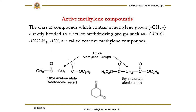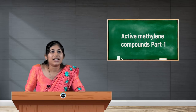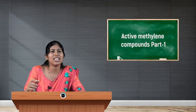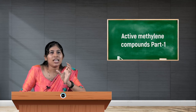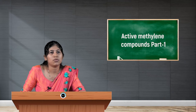The CH2 group bonded to an electron withdrawing group on either side becomes highly acidic. That is why when you add any reagent to active methylene compounds, the reaction takes place at that position only. Any electron withdrawing group attached to either side of the methylene group makes it an active methylene compound.